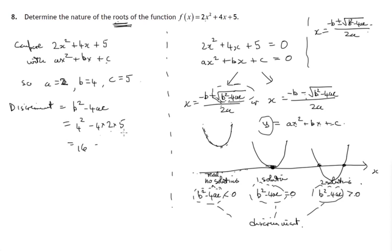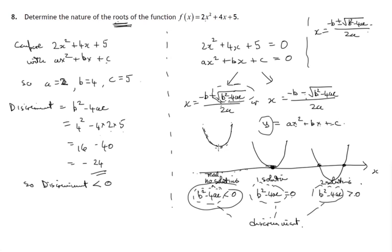4 squared is 16. 4 times 2 is 8, and 8 times 5 is 40. So you get 16 minus 40, which gives a negative answer: negative 24. The discriminant is less than zero. That's the situation where there are no real solutions — there is no real value of x that will make this expression equal to zero. This quadratic graph does not cross the x-axis, so there are no real solutions.